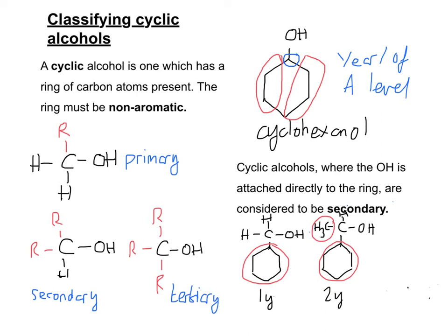And if finally we had the same ring, except this time we had two lots of CH3 coming off, for example, that would be a tertiary because there are three R groups coming off the carbon that the OH is attached to.